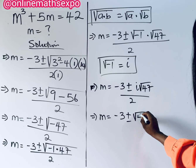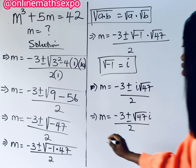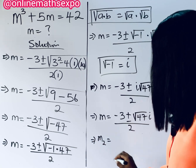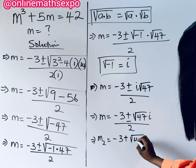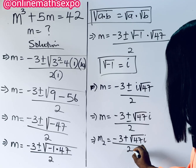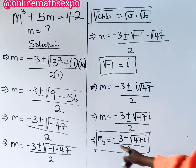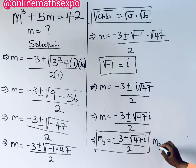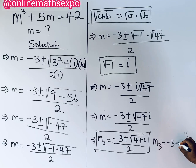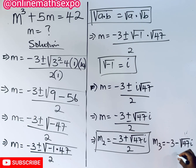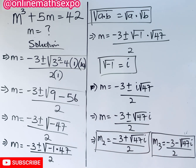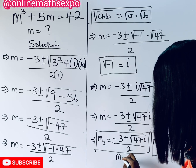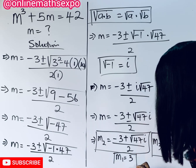So our three values of m are as follows. The second value of m is: m₂ equals negative 3 plus i√47, all divided by 2. The third value of m is: m₃ equals negative 3 minus i√47, all divided by 2.